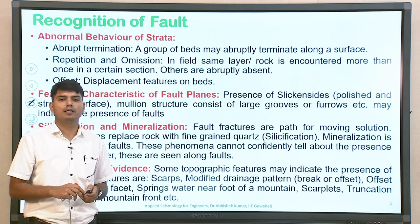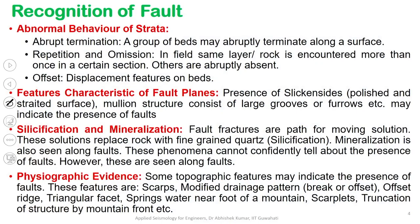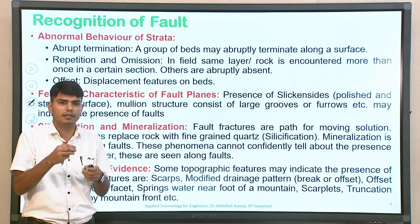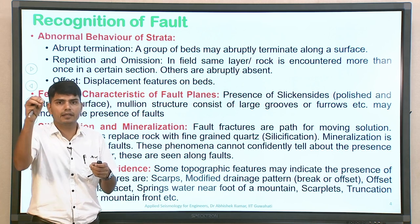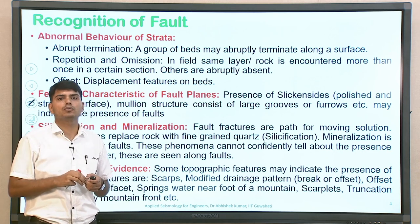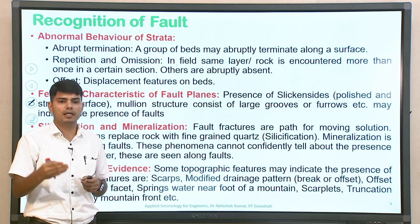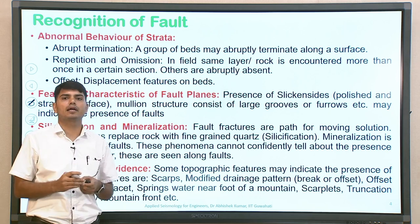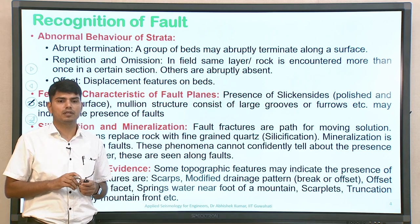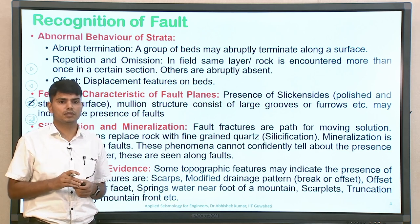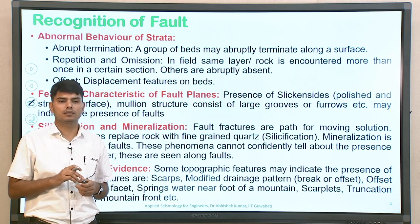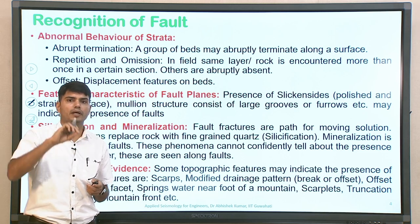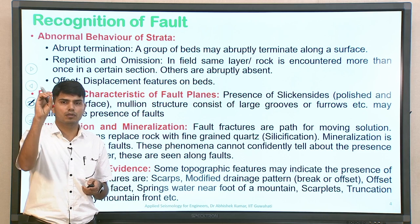Feature characteristics of fault planes include presence of slickensides — polished and striated surfaces. Mullion structures consist of larger grooves and furrows. Such depositions getting eroded or travelled along the fault plane and deposited to other stratification are also indicators. Silicification and mineralization are also quite dominant in terms of fault plane movement and are considered features that can help in identifying a possible fault. Fault fractures are a path for moving solutions that replace rock with fine-grained quartz — you can often see some movement of solution from lower bedrock to upper stratification, which is generally an indication of silicification.